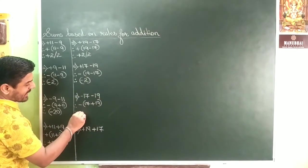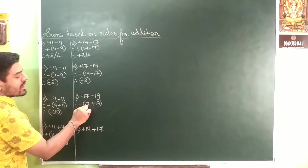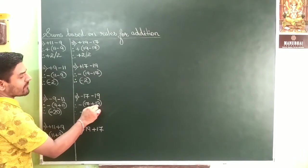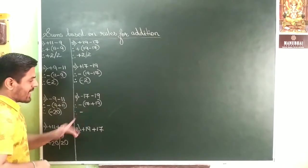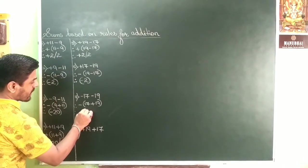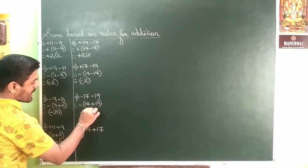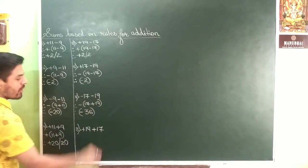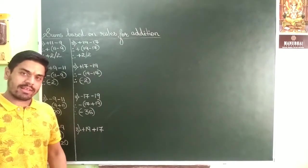Negative sign. 17 plus 19 will give you an answer of 36. And negative numbers are always in brackets. Clear?